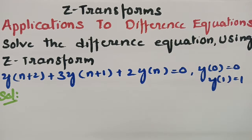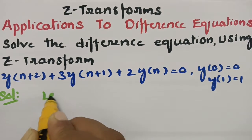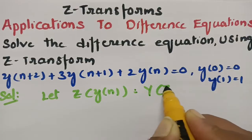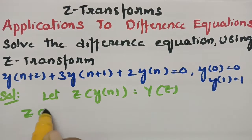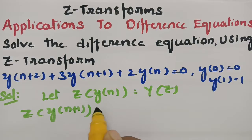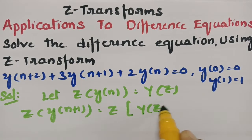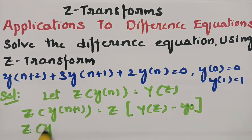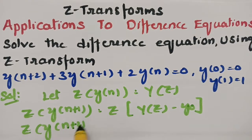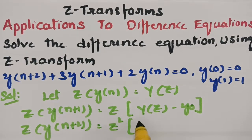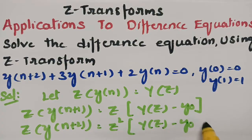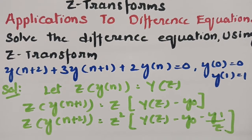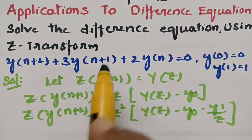In order to solve this problem, we suppose: let Z-transform of y(n) equal capital Y(z). Next, Z-transform of y(n+1) equals Z·Y(z) minus y(0). And Z-transform of y(n+2) equals Z²·Y(z) minus y(0) minus y(1)/Z. We have to substitute all these conditions in the given equation.